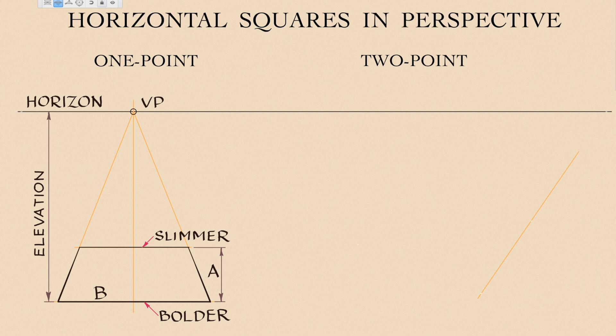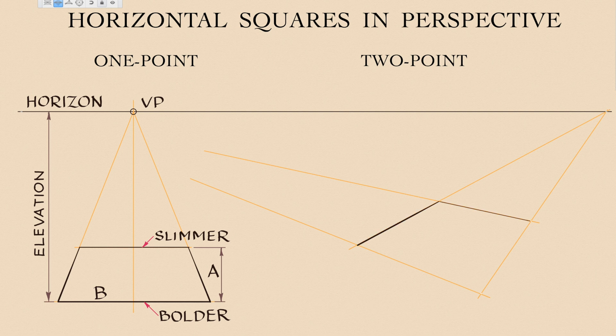Now let's make another drawing of a square in two-point perspective. Instead of one vanishing point, we will use two points. Here's the square that is seen from above in two-point perspective.